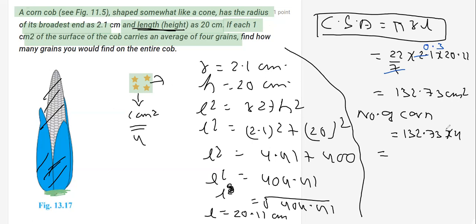And this value, on multiplying, you'll get 530.92. So on rounding off, we can say approximately 531. Right, this much number of corn will be there.